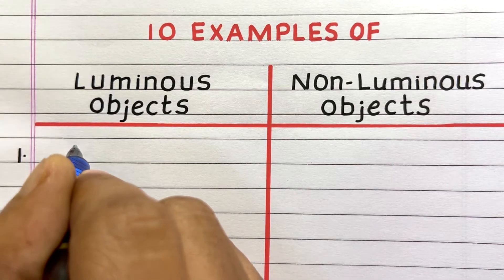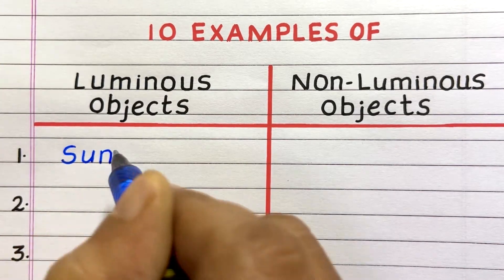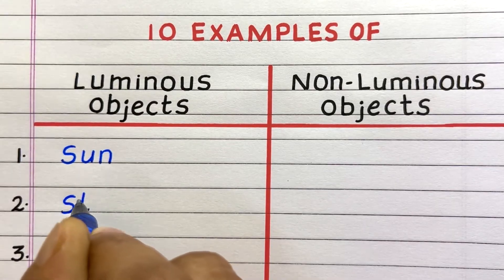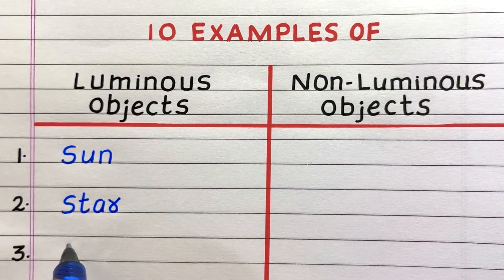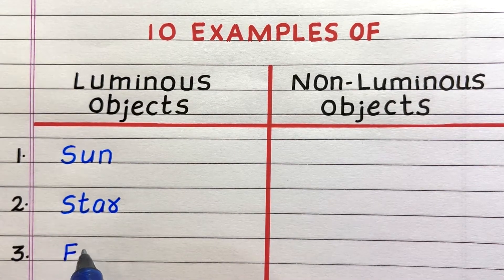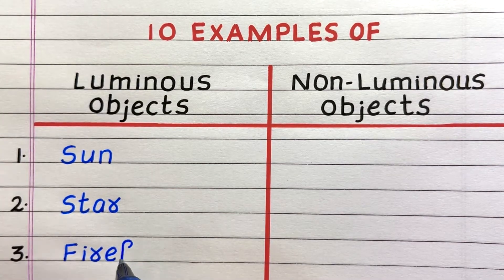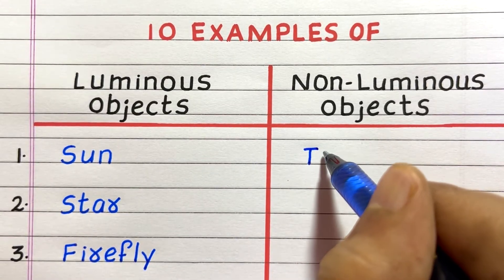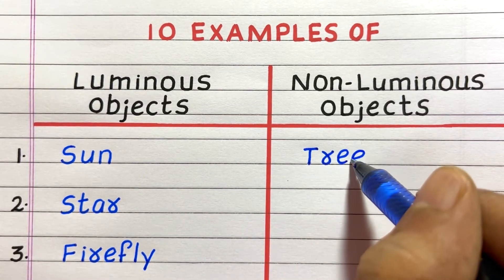First example of a luminous object is Sun. Second is star. Third is firefly. First example of a non-luminous object is tree.